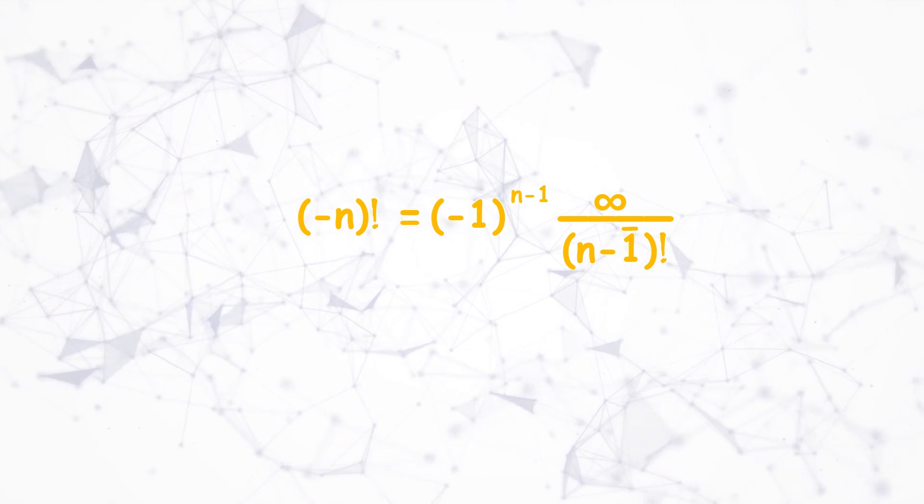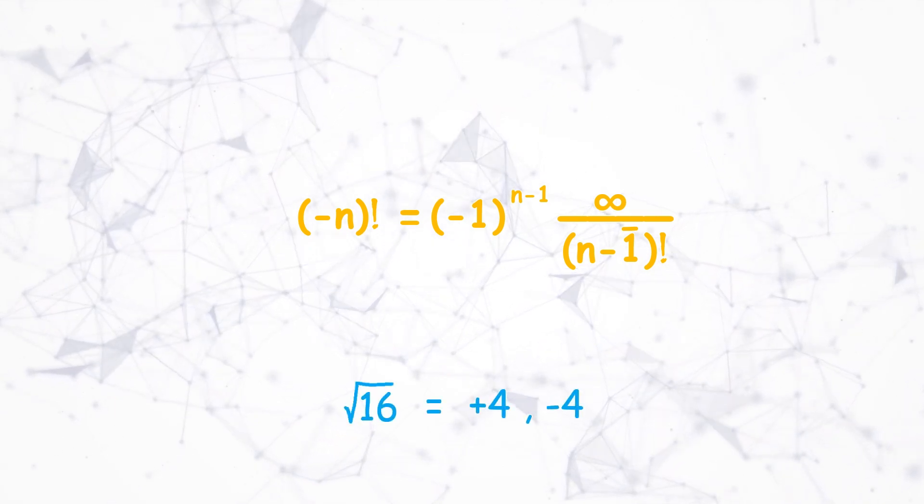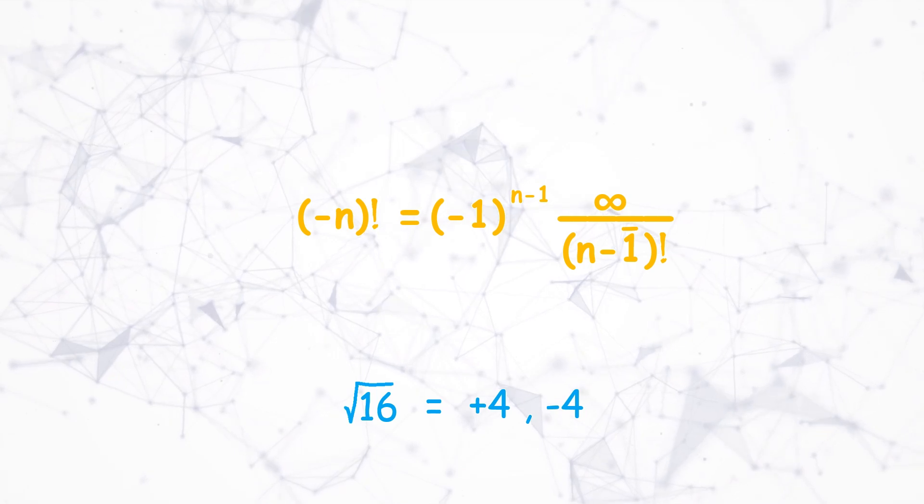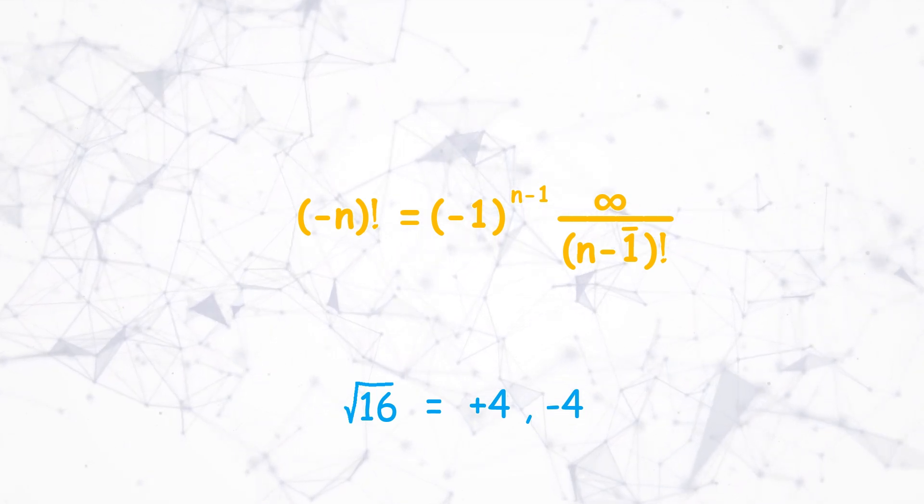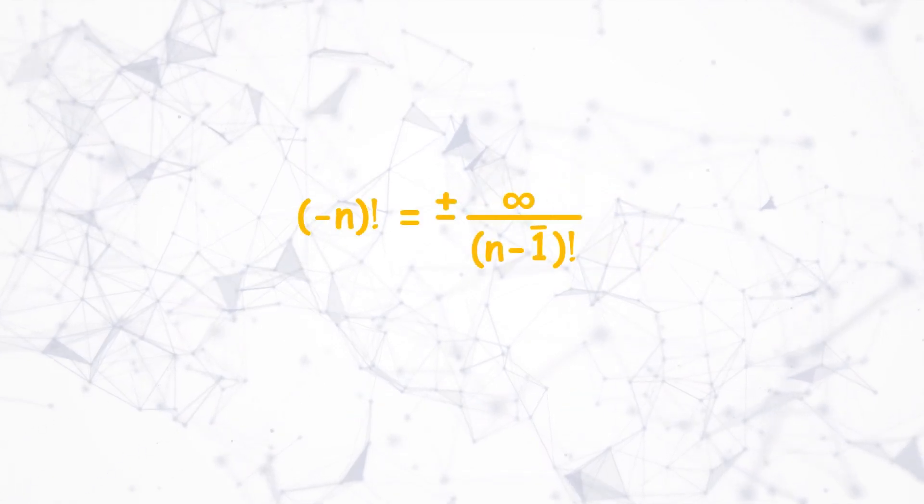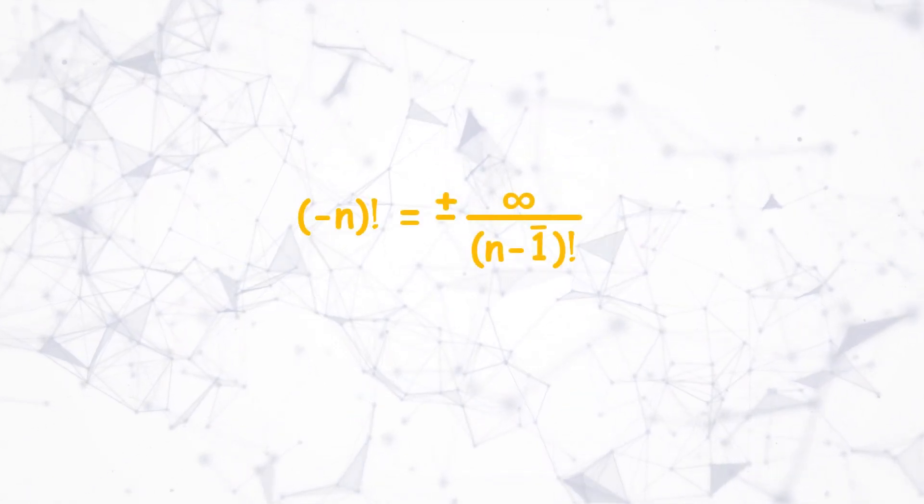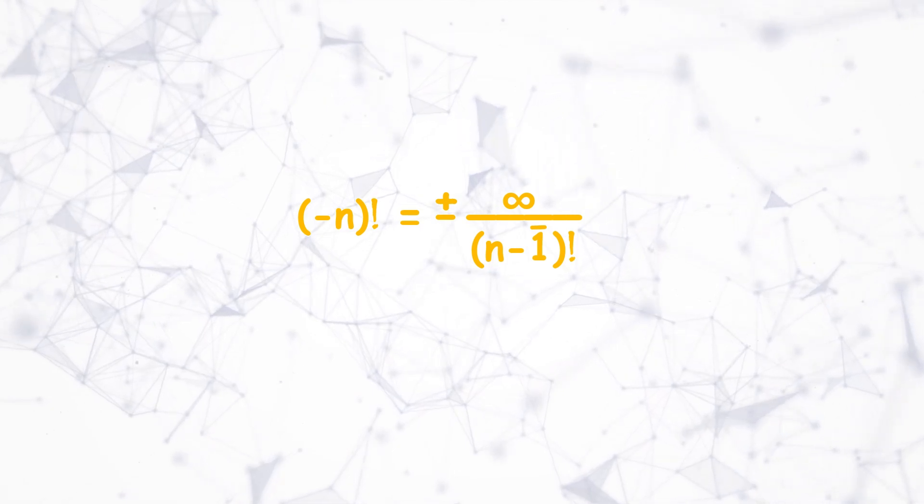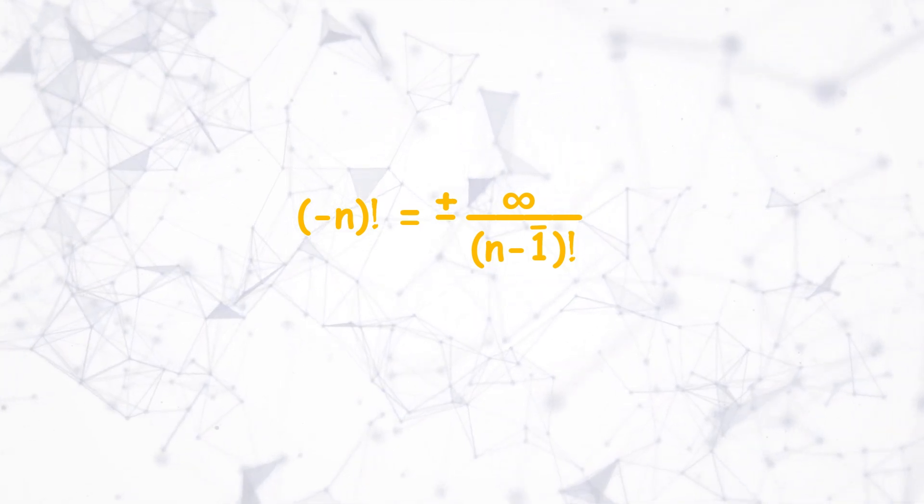But the way any root, example root 16, has plus or minus as the correct natural solution, the sign of 0 and infinity can be both positive or negative as a correct natural solution. And here we just have to remember one property: the sign will alternate for every increment of n.